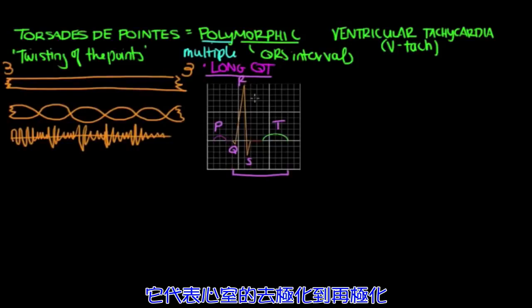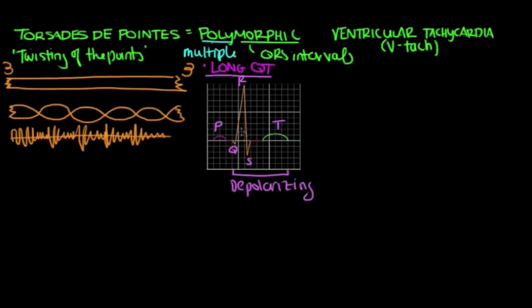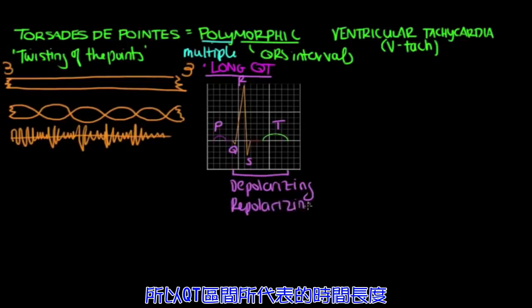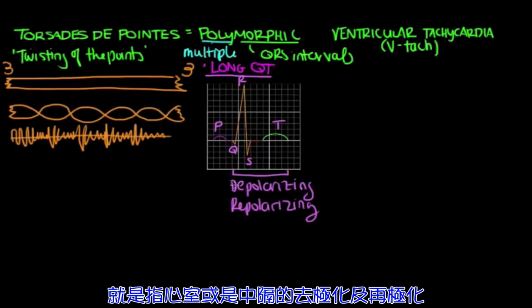It represents when the ventricles are depolarizing and when they're repolarizing. So the QT interval represents the length of time or the interval when the ventricles depolarize and repolarize.